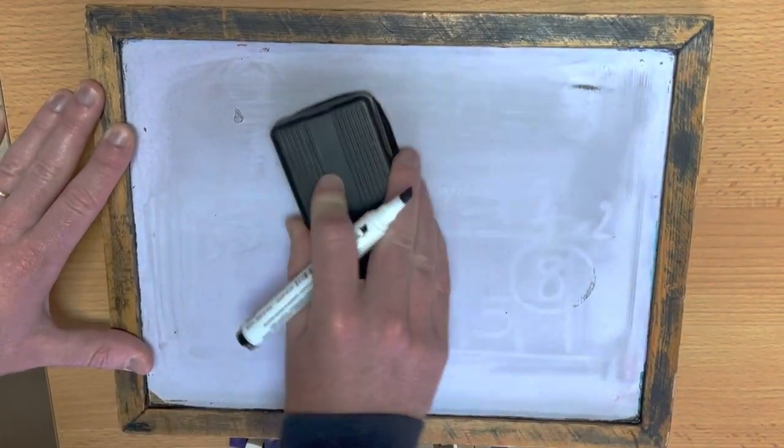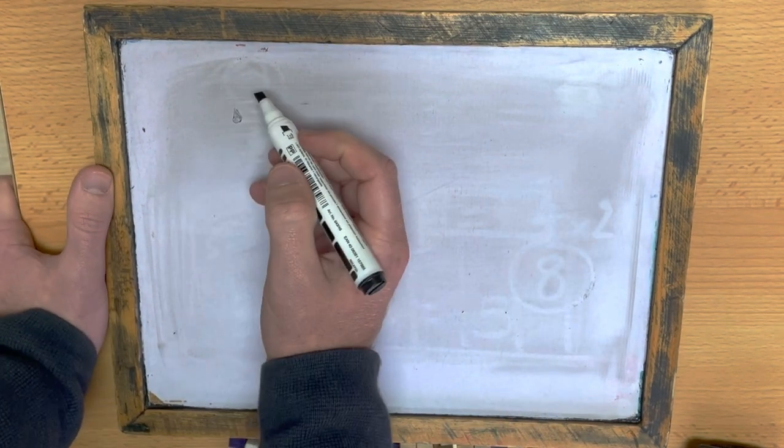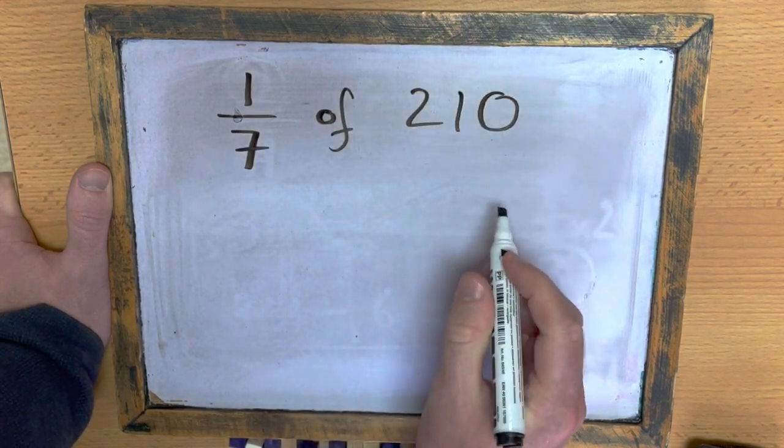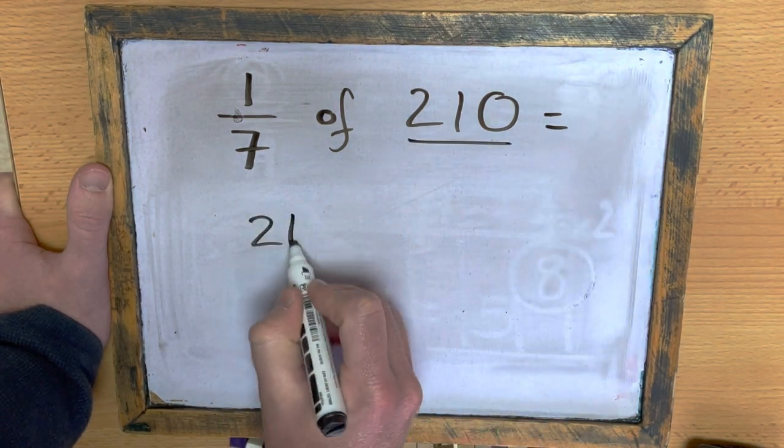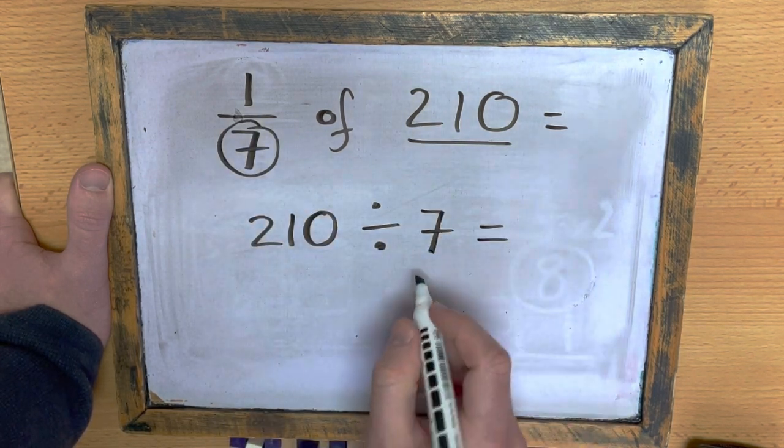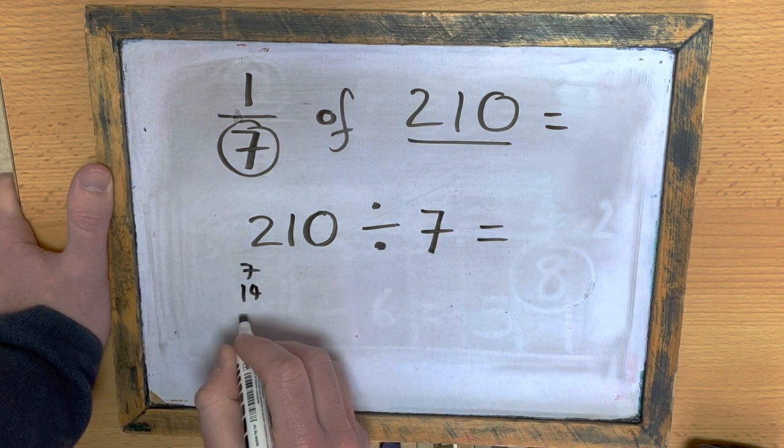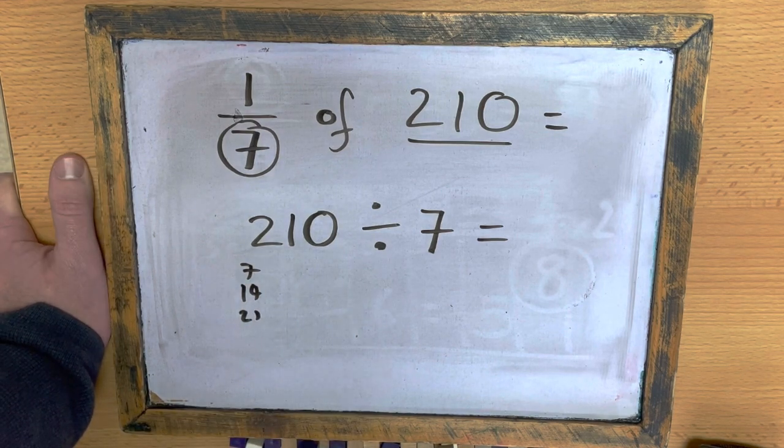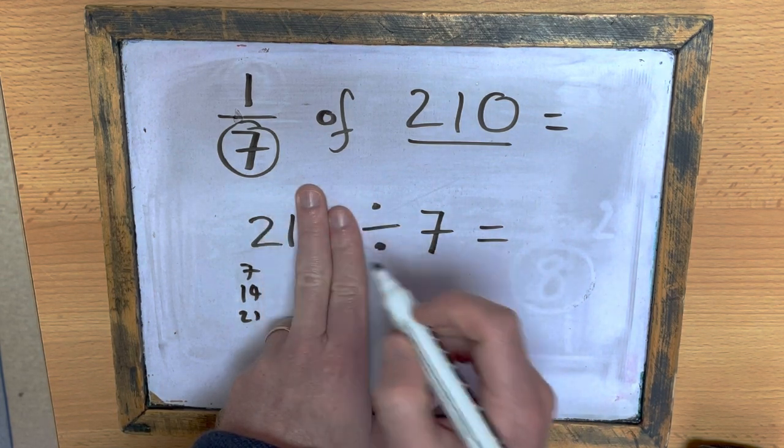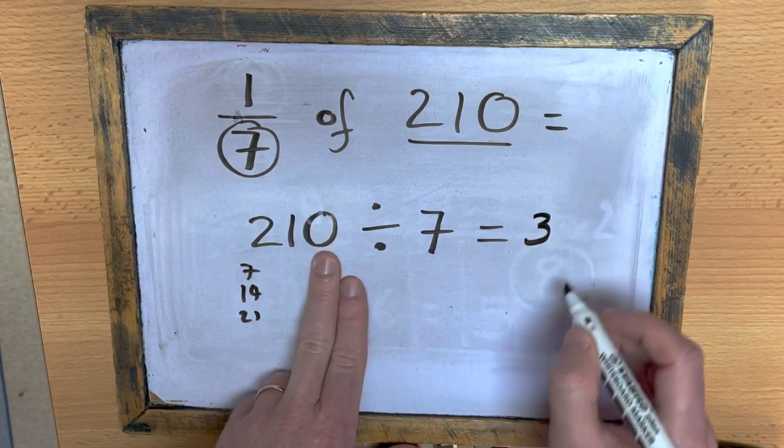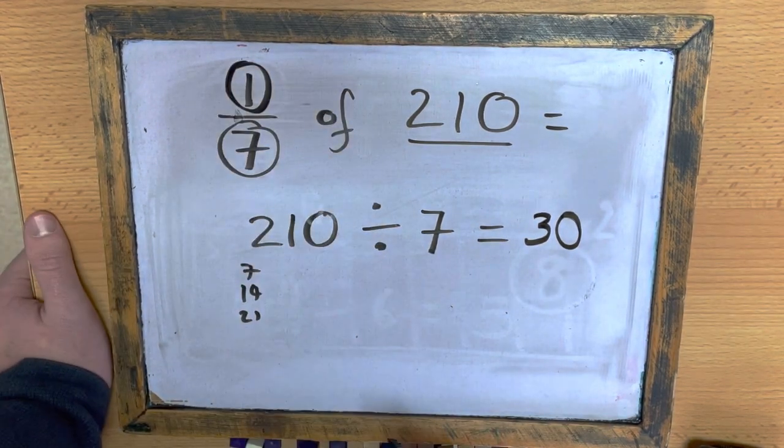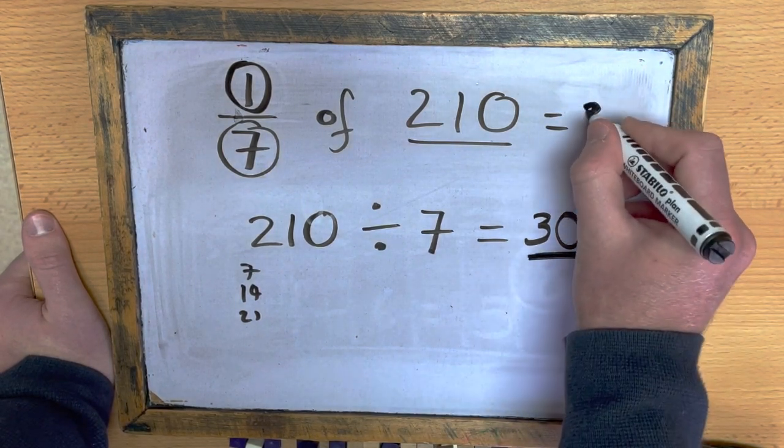And once you've mastered this method, you can then go ahead and find out fractions of larger numbers, such as one-seventh of 210. So, 210 divided by 7. I'm not going to do my 7 times table all the way up until 210, because that will take me a long time. So, what I'm going to do instead is I'm going to cover up the 0, and I'm going to say, how many 7s in 21? There are 3. And then I'm going to add this 0. So, 210 divided by 7 is 30. And because I only need to work out one-seventh, this is my final answer.